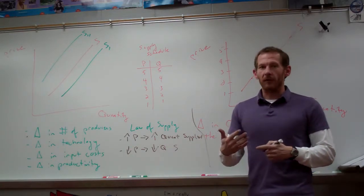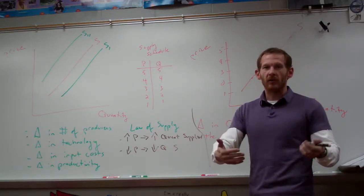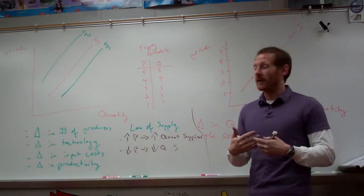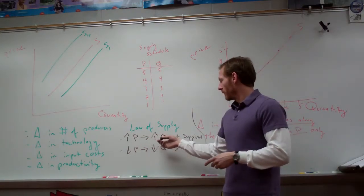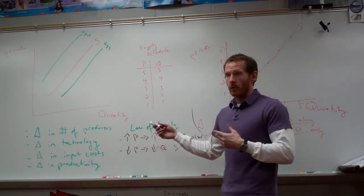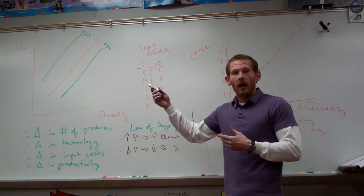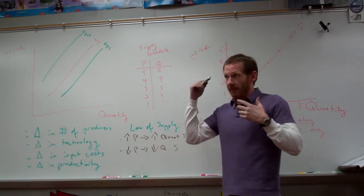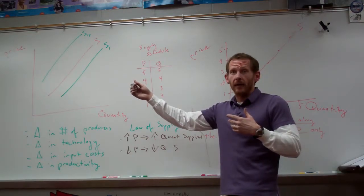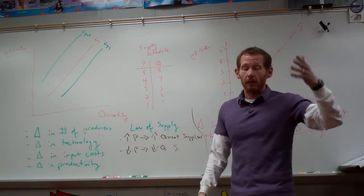If demand is from the consumer's perspective, supply is from a producer's perspective. So as prices go up, producers are willing to supply more. Obviously, if they can supply goods for way more than they'd like to, then they would want to supply more.